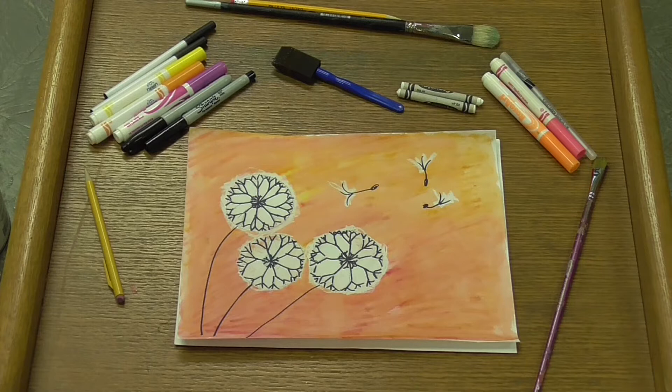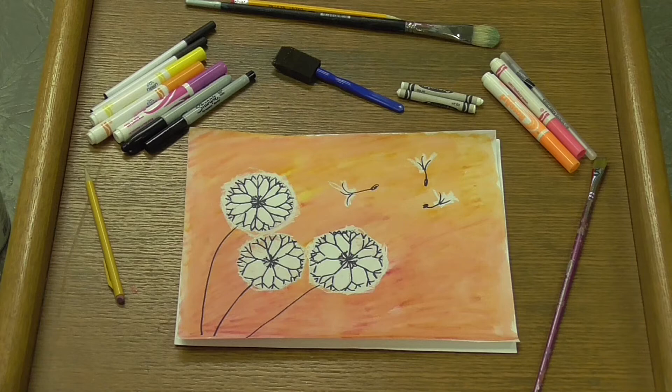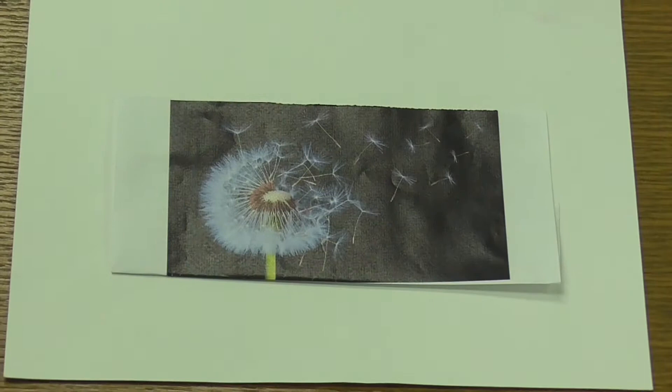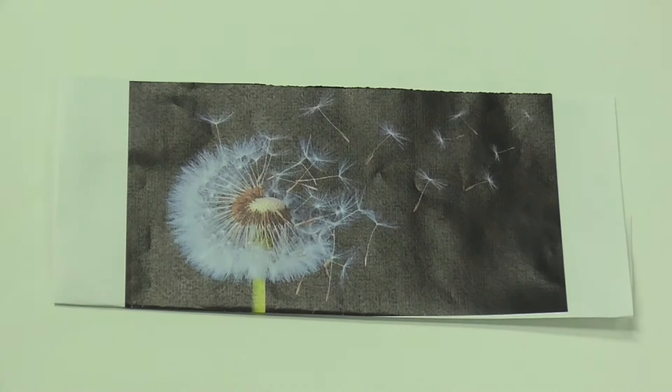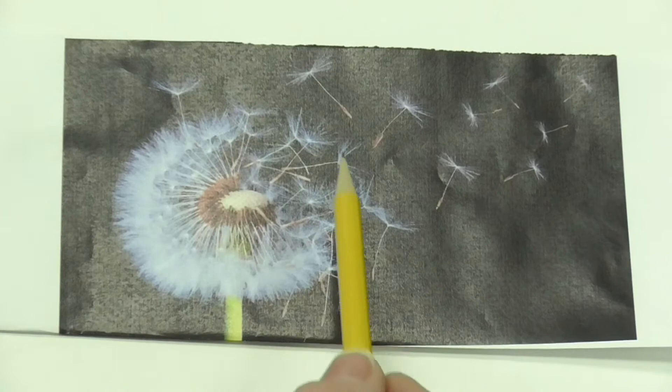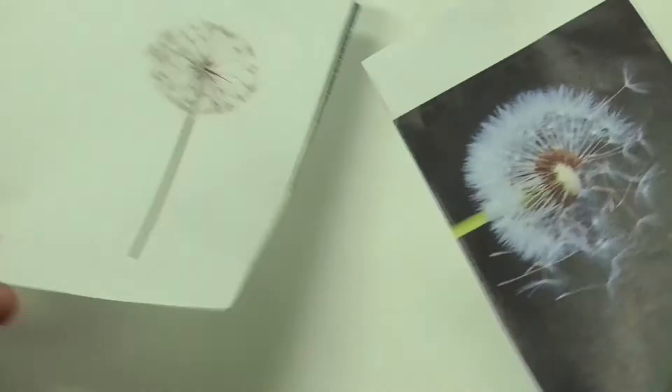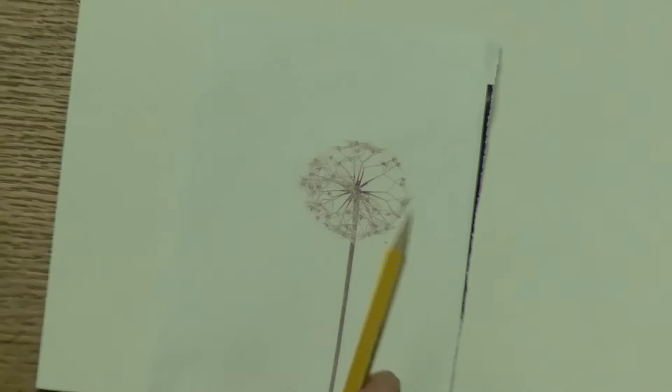Let's get started. Here I have an actual photo of the way a dandelion looks so we can get an idea. Notice there's kind of a circle that goes around to the middle—we're going to think about that circle in this drawing process. Here's another picture where a lot of them have already blown away, so you can see an outside circle and an inside circle.